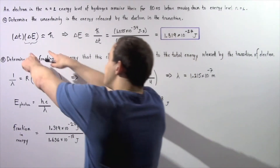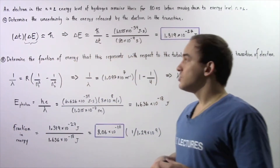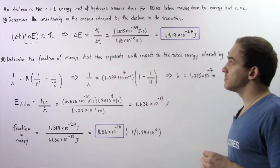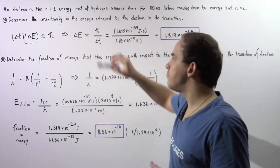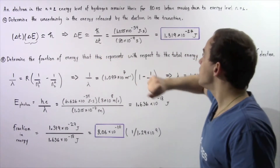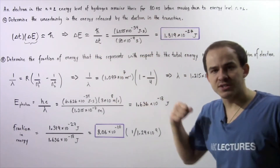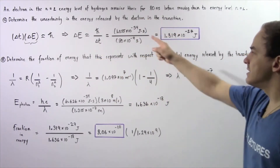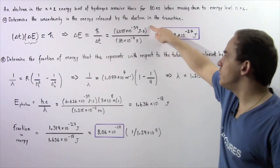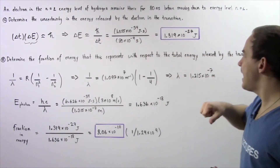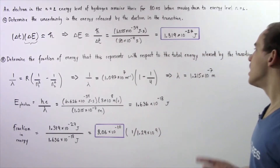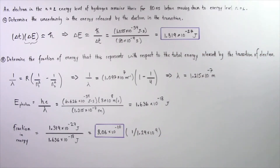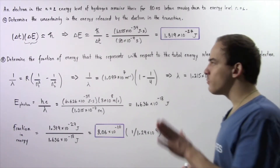We want to solve for delta E. Delta E is approximately equal to H-bar divided by the uncertainty in time, which is equal to 80 nanoseconds or 80 times 10 to the negative 9 seconds. Dividing these two quantities, the seconds cancel, and we get an uncertainty in energy of 1.319 times 10 to the negative 27 joules.